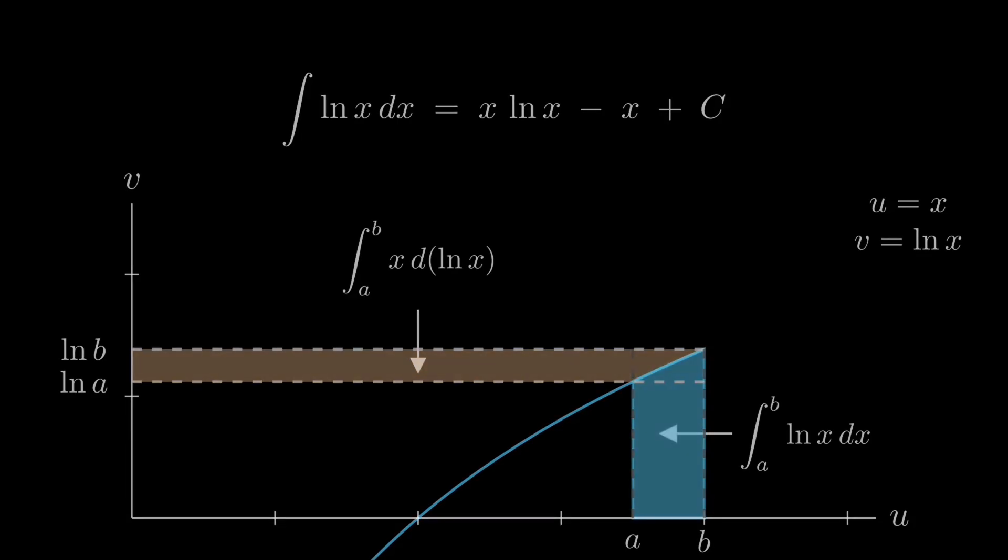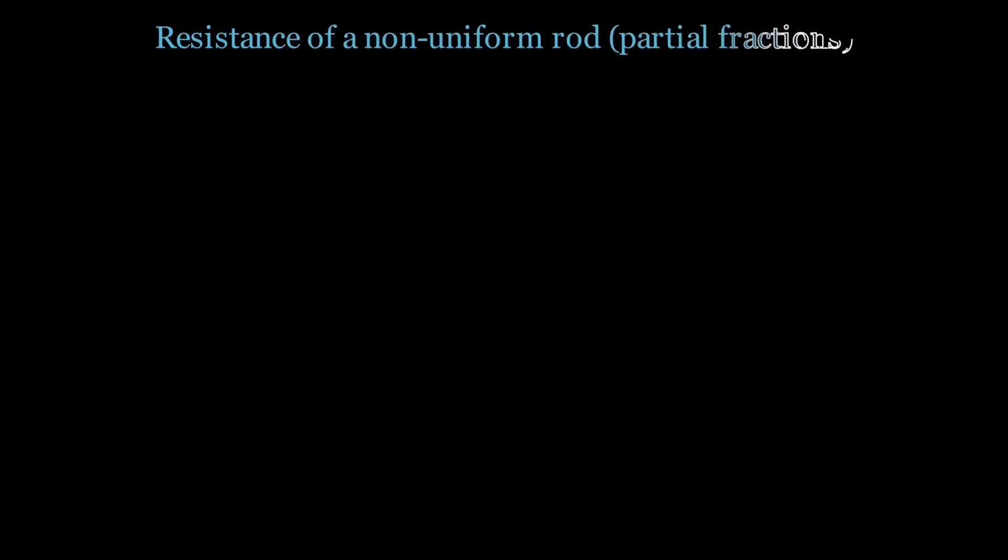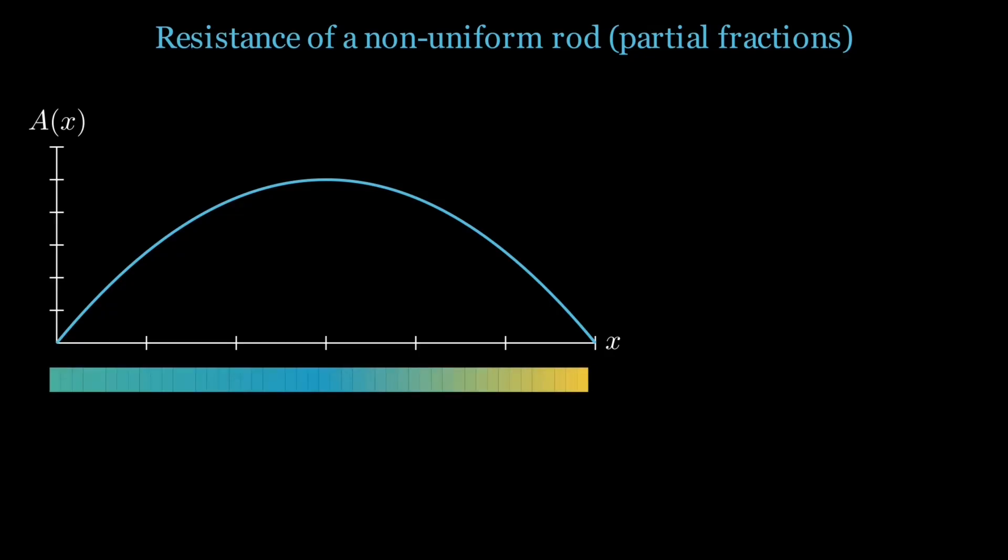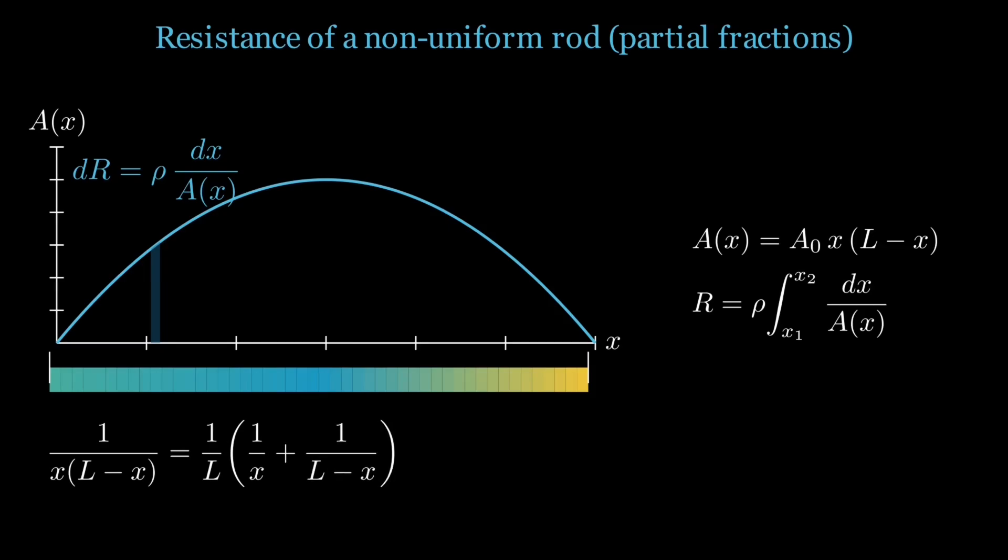With substitution and by-parts covered, we can now tackle harder rational functions using partial fractions and trigonometric substitutions, wrapping up our core techniques with a few key examples. In a non-uniform rod, the area changes along its length, so each tiny slice has a different resistance. Adding them up means integrating the reciprocal of that area. The messy fraction in the formula hides a geometric pattern. It can be split into two simple reciprocal terms, each tied to one end of the rod.